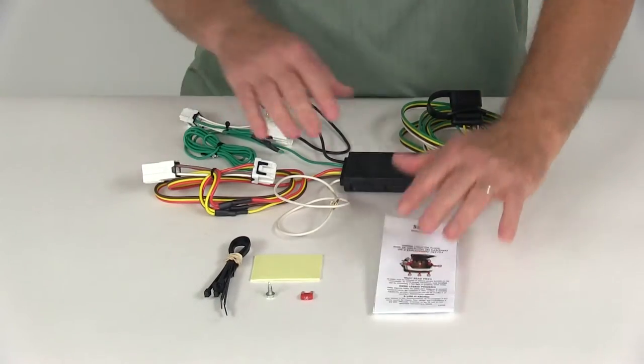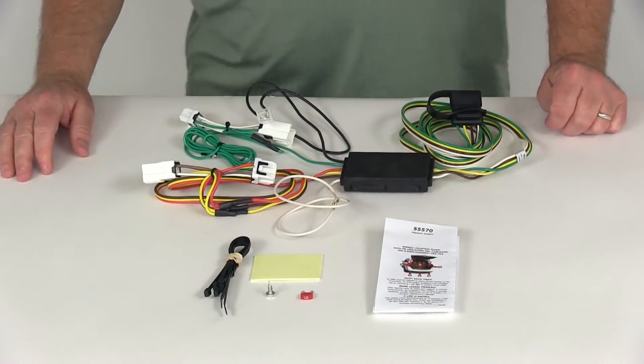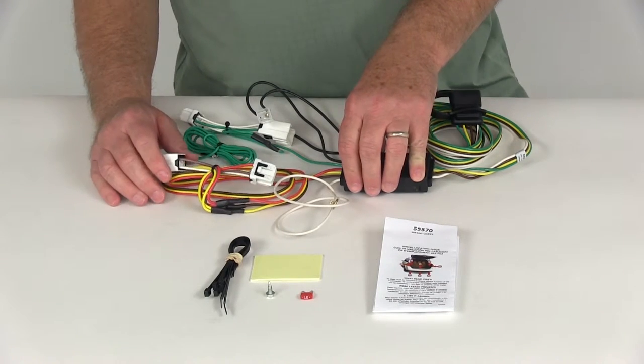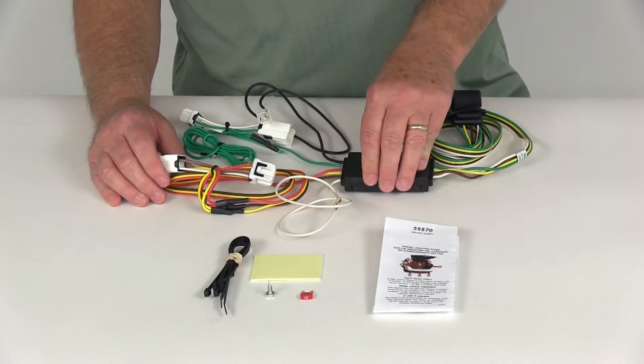Now it does come with everything shown here, I'm going to show you in a minute how these all will connect when you install it. So basically what you want to do is go to the rear of your vehicle, into the rear cargo area and get access behind the taillights.